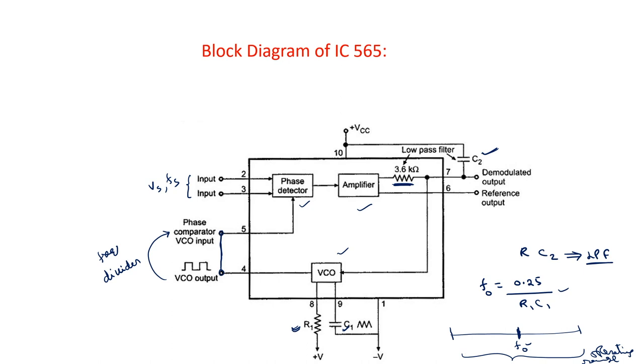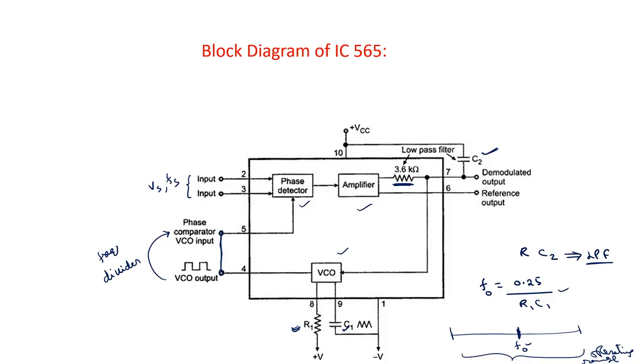There are two important parameters for the phase locked loop: one is called capture range and another is called lock-in range. We will derive the expressions for the capture range and lock-in range of IC 565. Before that, let us recall the definitions of lock-in range and capture range.